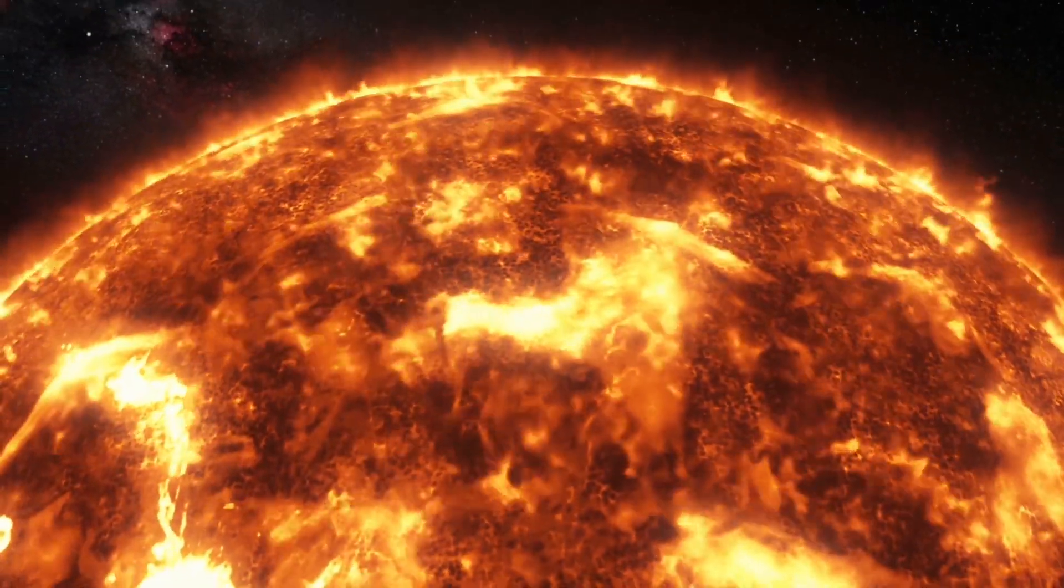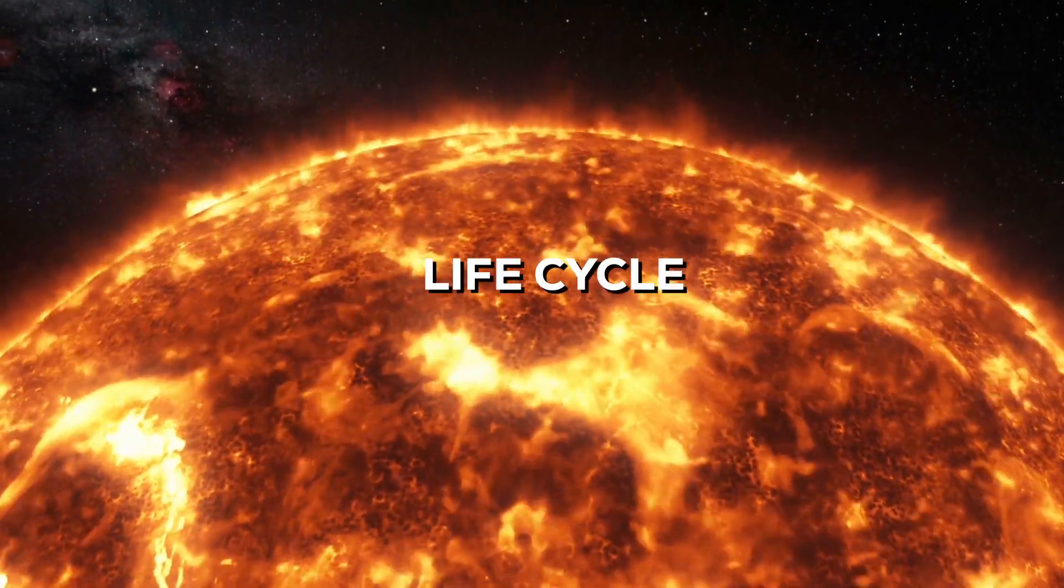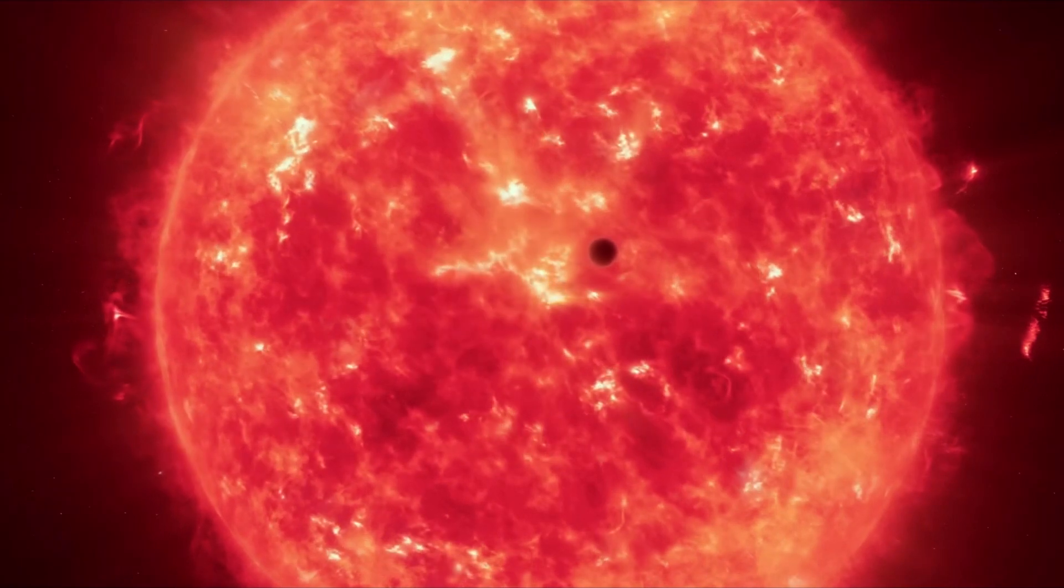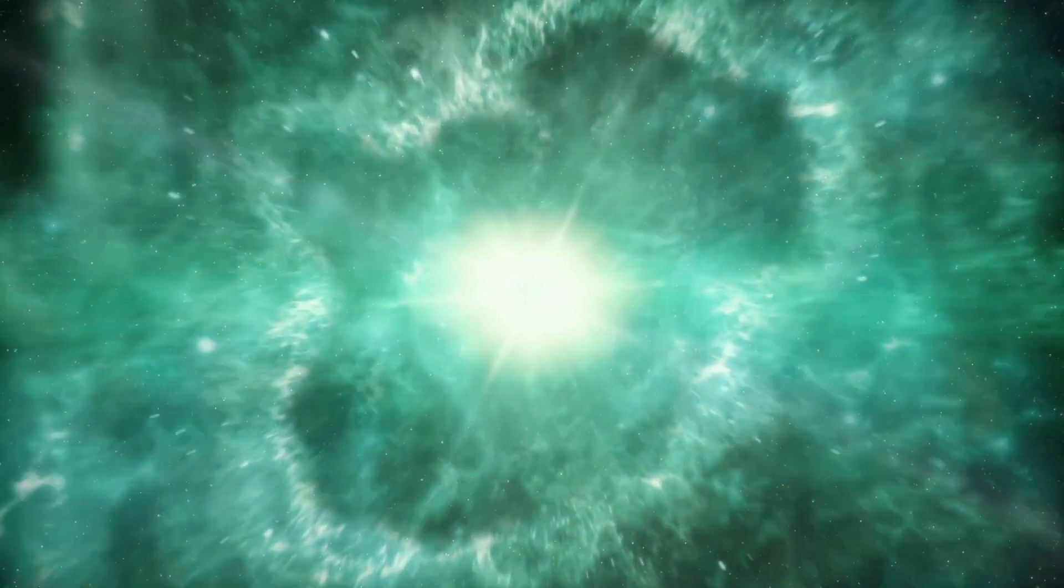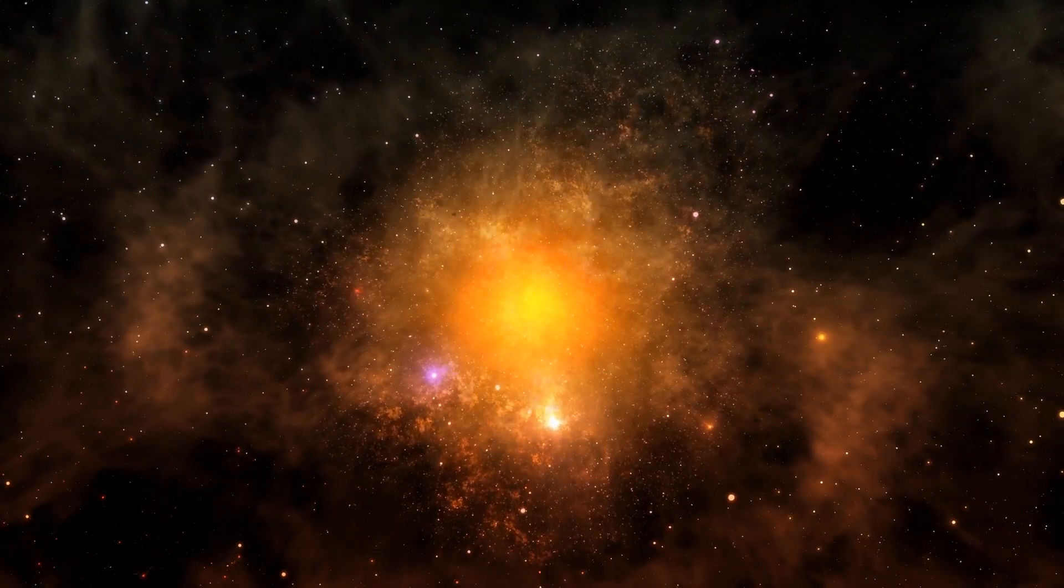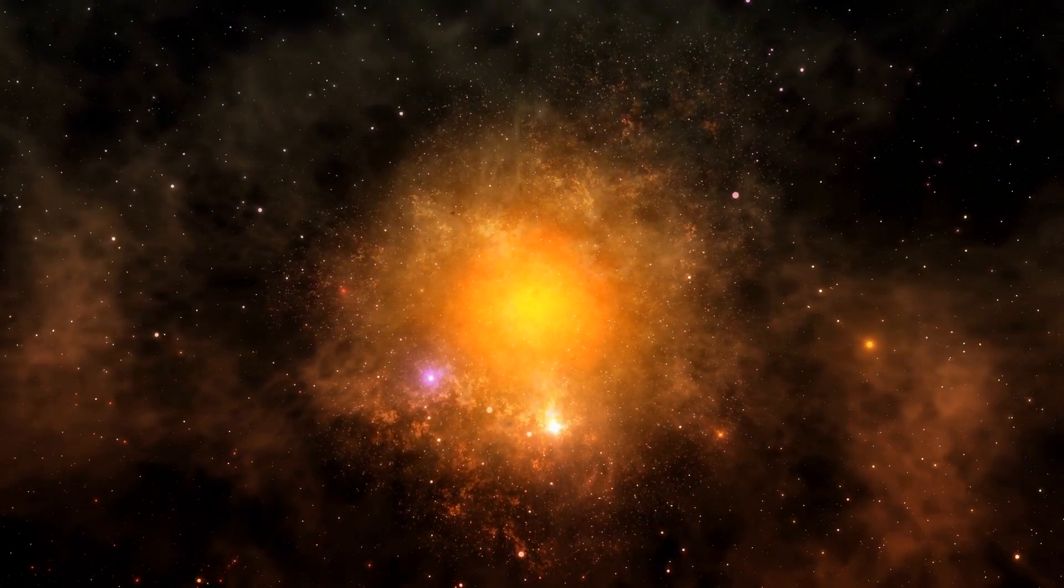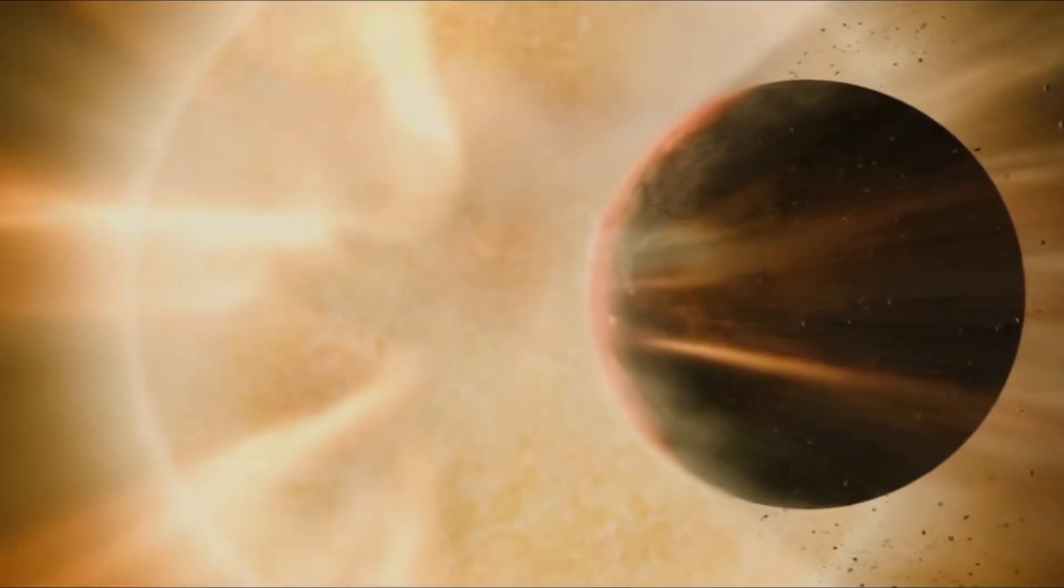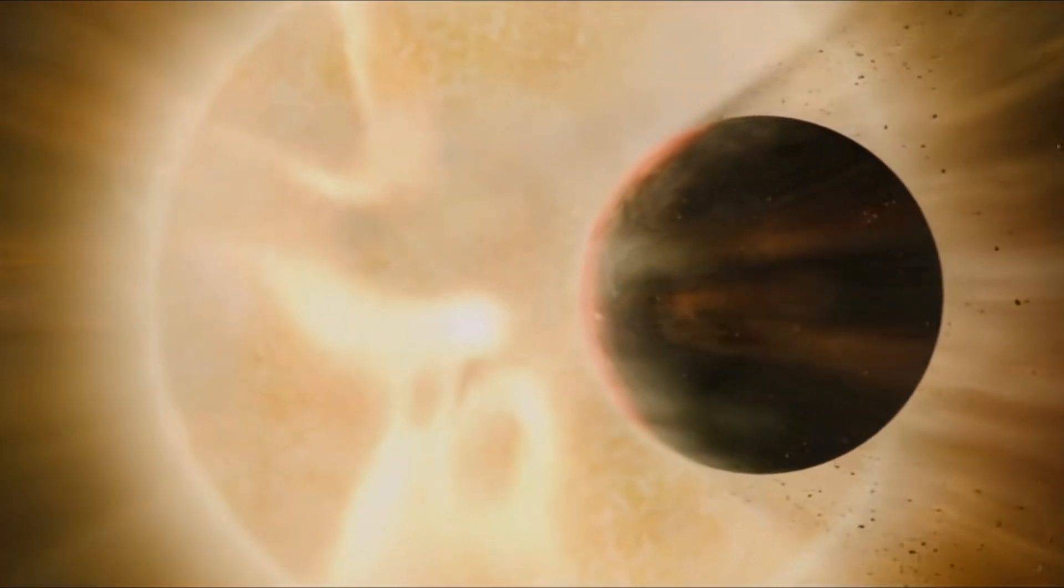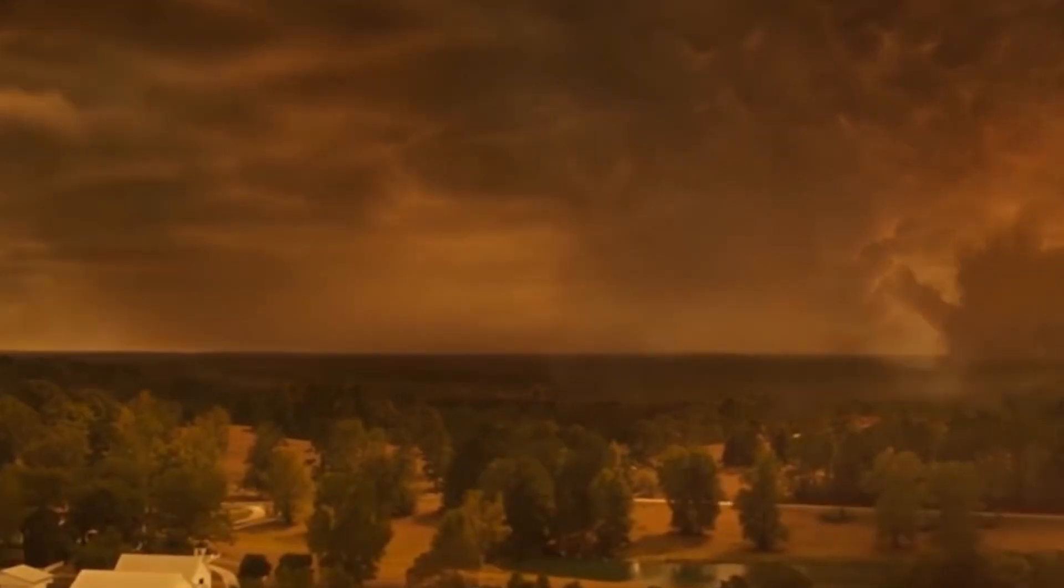Another aspect that makes Betelgeuse potentially dangerous is its life cycle. Being a supergiant star, it is approaching the end of its life and will eventually explode in a supernova. When this happens, the explosion will release an extraordinary amount of energy and matter. While the exact effects of a supernova on our solar system depend on its distance from Earth, it could have significant consequences.